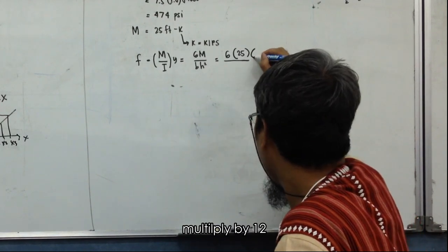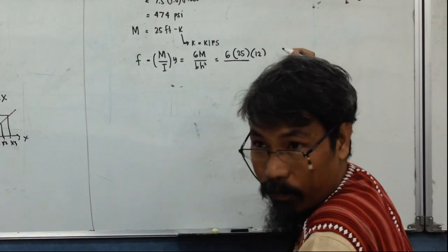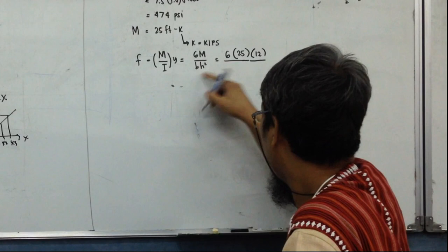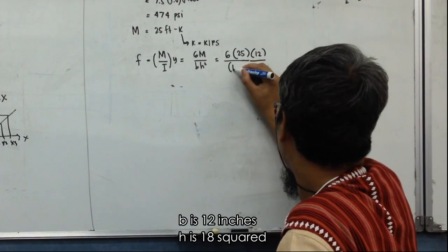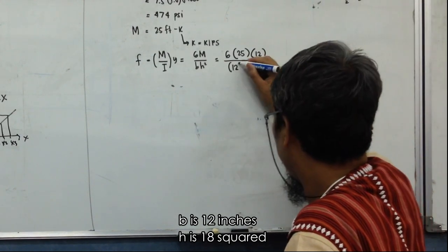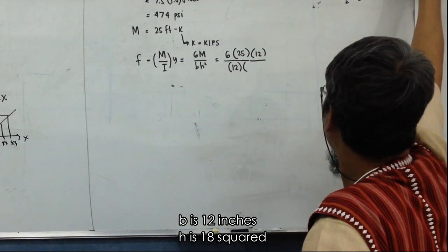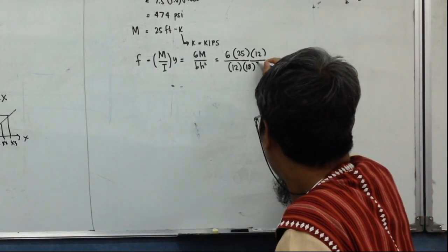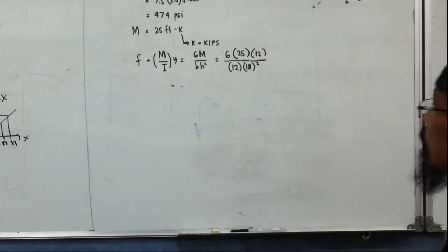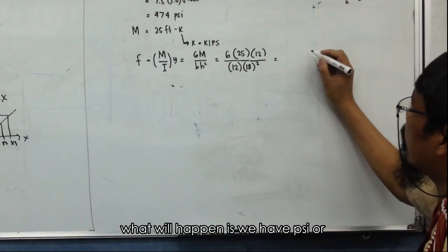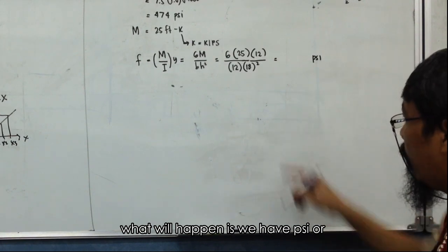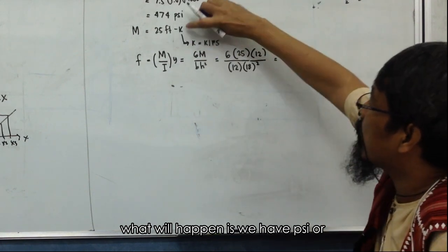So multiply by 12, and then b is 12 inches, x is 18 inches. So what will happen is we have x is 12 inches, or since this is k, kilo.